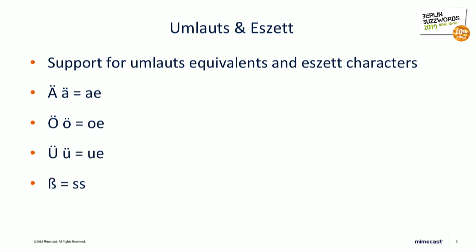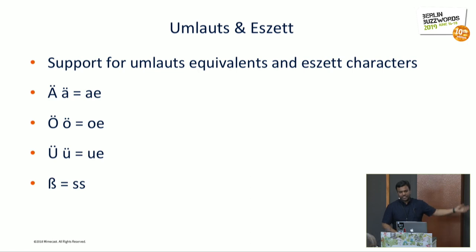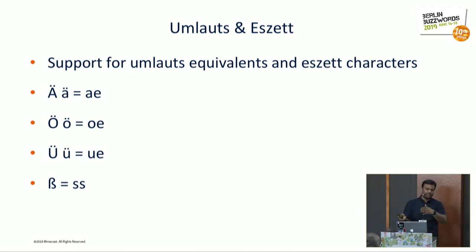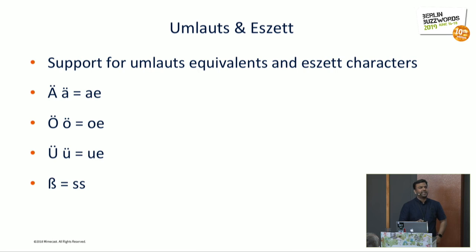Another problem was character equivalences in German — languages that have umlauts, which can be represented by a character followed by the letter E, and a special SZ character which can also be represented by a double S. For example, if a user searches using character equivalences, they won't be able to find emails that are written with actual umlauts or SZ characters. These two problems — compound words and character equivalences — led us to conclude we cannot just have a whitespace analyzer; we need a different strategy.